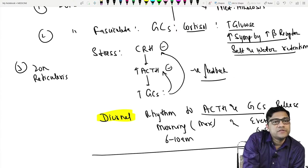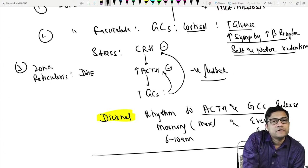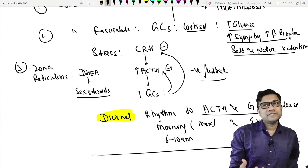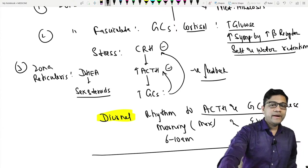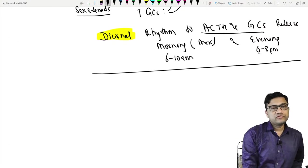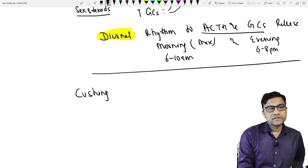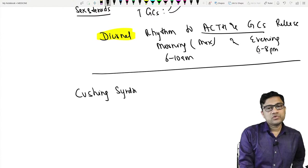The third layer of the adrenal cortex is zona reticularis, which releases sex steroids. It produces DHEA, which then makes sex steroids. The Leydig cells make testosterone and the theca cells make estrogens.